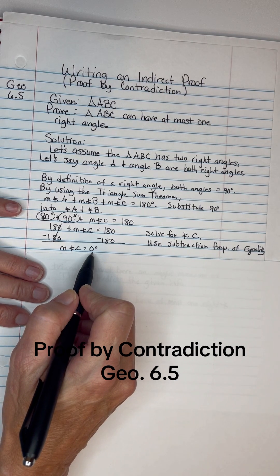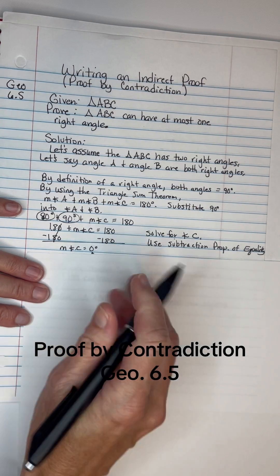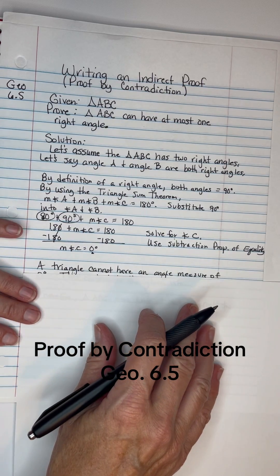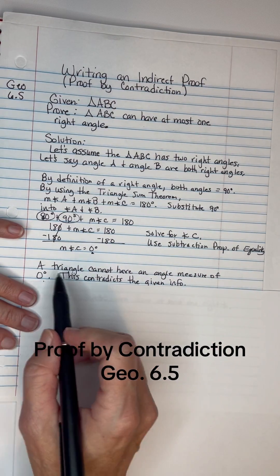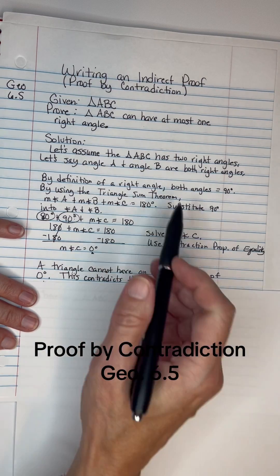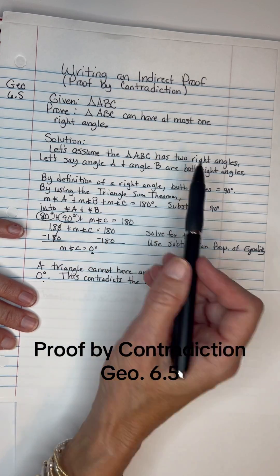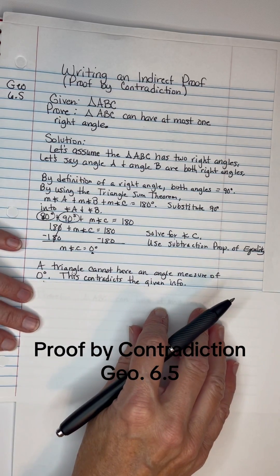Well, here's the problem. If you've got a triangle, you cannot have a 0 degree angle. Triangle cannot have an angle measure of 0 degrees. This contradicts the given information. When we said that let's assume it has two right angles, that will not work.